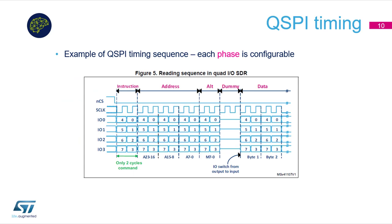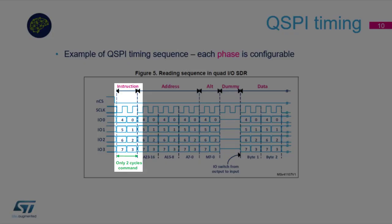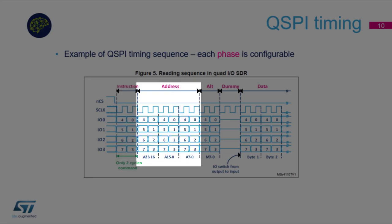Here you can see typical usage of Quad SPI communication. First is the instruction phase: an 8-bit command is sent to the flash memory specifying the type of operation to be performed. This command is fully configurable. Then comes the address phase, where the address is sent to the flash memory specifying the address of the data to be read or written.